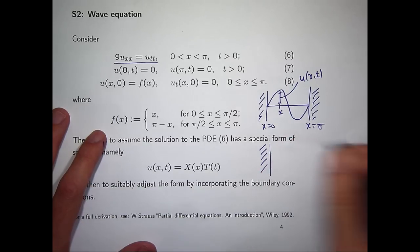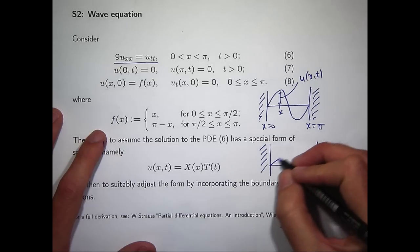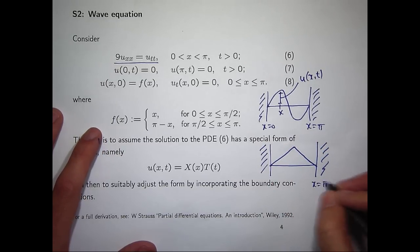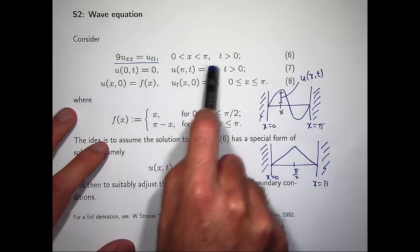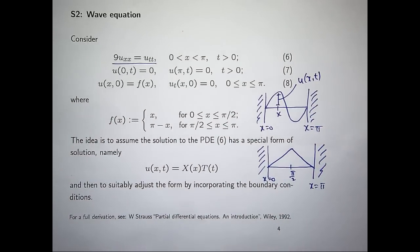If I draw that function in, it's going to look something like a triangle. This is the initial starting position of the string. The ends are clamped so they don't vibrate or move. The set of conditions 8 gives us the initial displacement, and u sub t of x comma 0 is the initial velocity — in this case the initial velocity is 0, the string is released from rest.